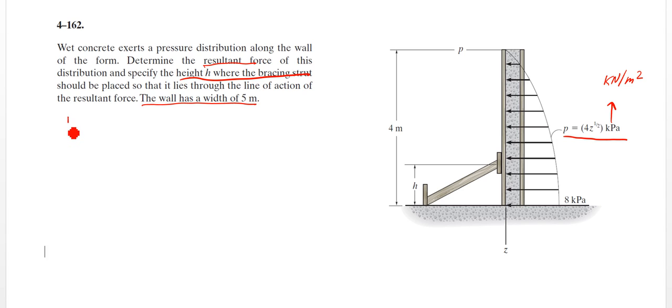So the steps to solve this: step 1, we're going to find our loading equation in terms of kilonewtons per meter. Step 2, we're going to find FR, which is going to be the integration over L of W(z) dz.